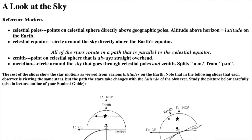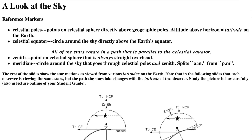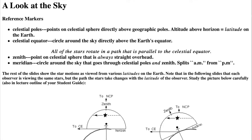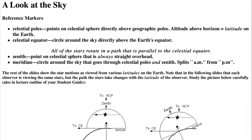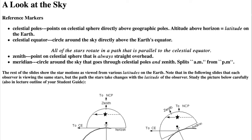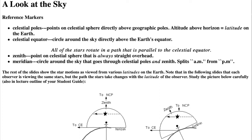The sky around us can be imagined to be like a great hollow sphere surrounding the earth, called the celestial sphere. You can see one half of the celestial sphere at any one time because the earth, the ground you're standing on, blocks the rest. What part of the celestial sphere you can see depends on the time of day and your latitude, which is the number of degrees you are from the equator.